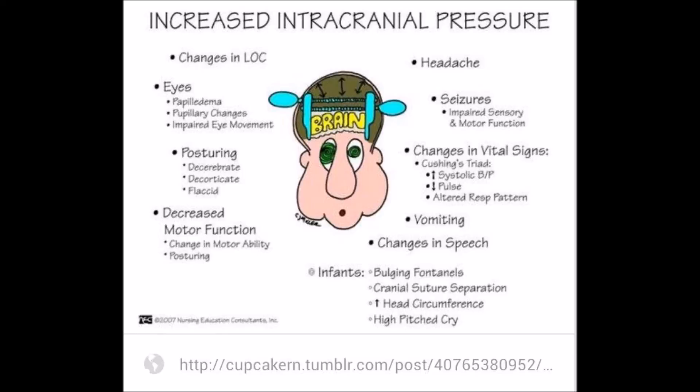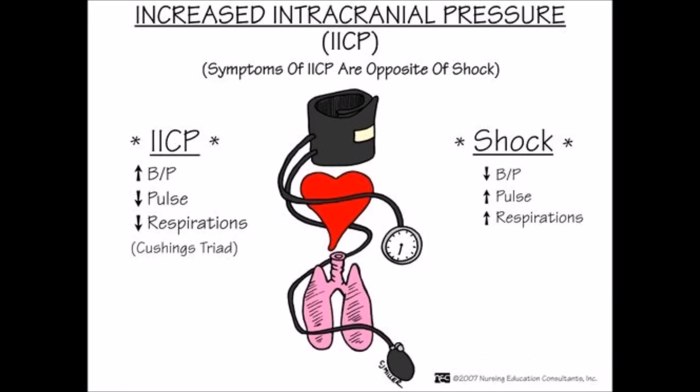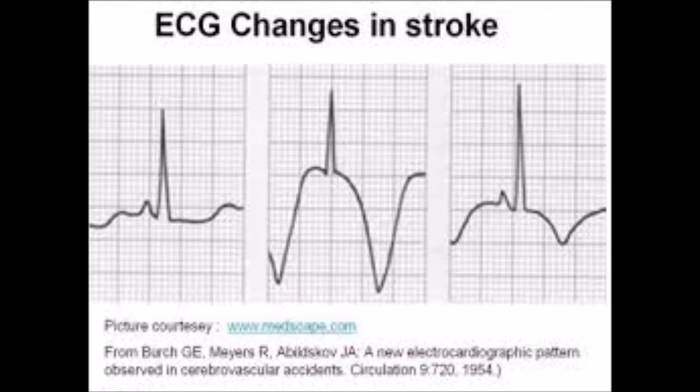Changes in vital signs, which we'll cover in more depth, and vomiting and changes in speech. Those changes in vital signs are usually referred to as Cushing's reflex, and they are as follows: increased blood pressure, a decreased pulse, and then respirations will become irregular or may follow other predetermined patterns which are not concurrent with normal respiratory function.